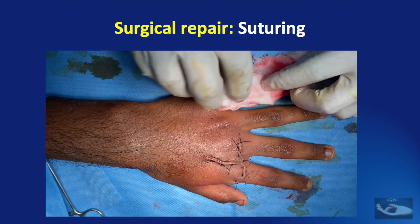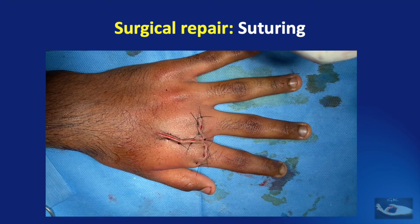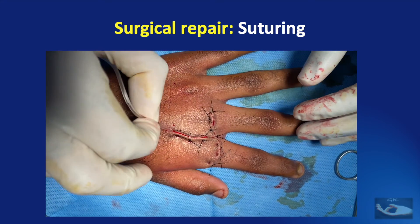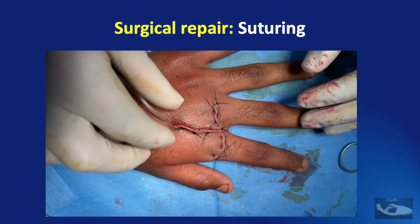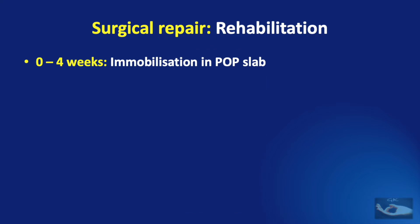Now the skin suturing is done with vertical mattress sutures. There is no need to put subcutaneous sutures. A drainage tube must be placed since there is a lot of dead space and hematoma can occur. A pad and bandage dressing is applied, and a below-elbow volar slab POP is applied with the wrist in 30 degrees of extension, metacarpophalangeal joints in 30 degrees of flexion, and interphalangeal joints straight. This POP immobilization is continued from 0 to 4 weeks.